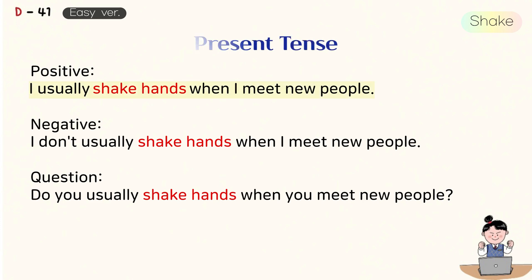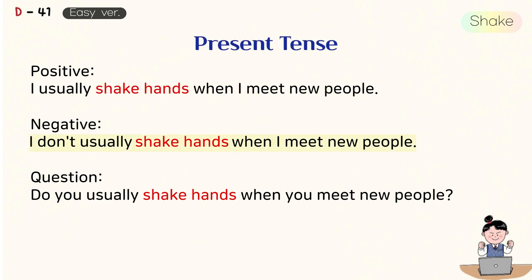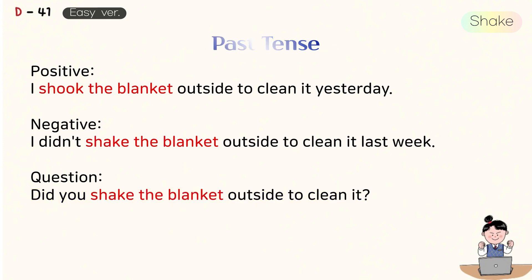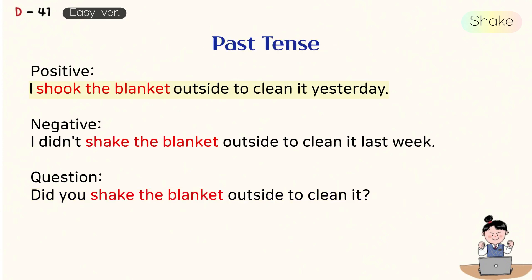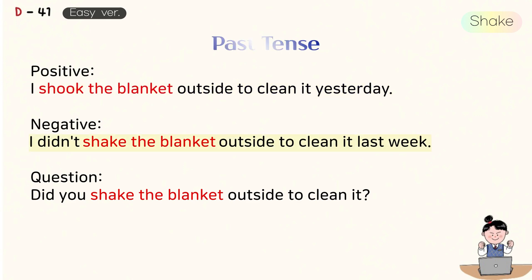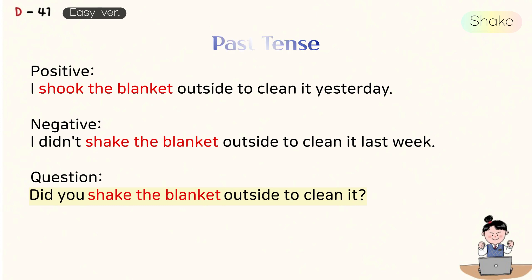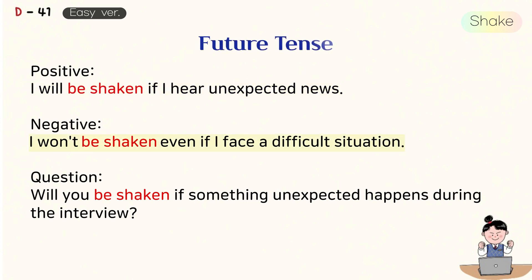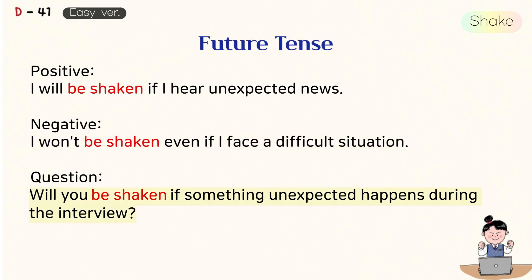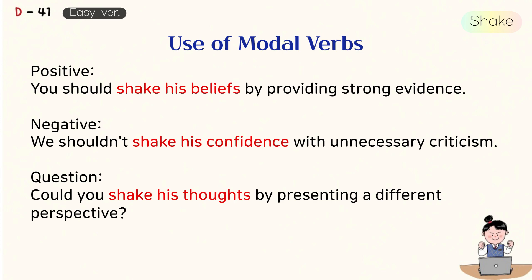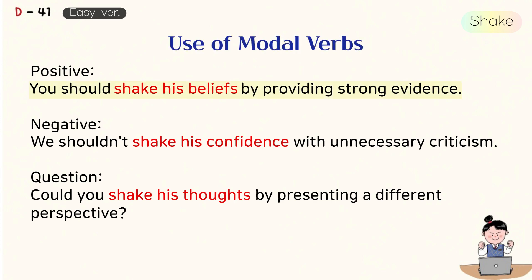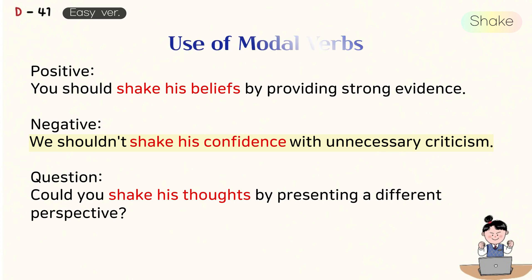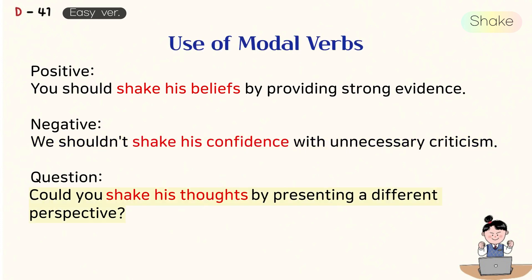Present tense: I usually shake hands when I meet new people. I don't usually shake hands when I meet new people. Do you usually shake hands when you meet new people? Past tense: I shook the blanket outside to clean it yesterday. I didn't shake the blanket outside to clean it last week. Did you shake the blanket outside to clean it? Future tense: I will be shaken if I hear unexpected news. I won't be shaken even if I face a difficult situation. Will you be shaken if something unexpected happens during the interview? Use of modal verbs: You should shake his beliefs by providing strong evidence. We shouldn't shake his confidence with unnecessary criticism. Could you shake his thoughts by presenting a different perspective?